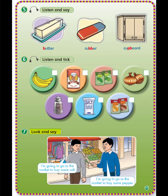7 — Look and say. I am going to go to the market to buy some salt. I am going to go to the market to buy some pepper.